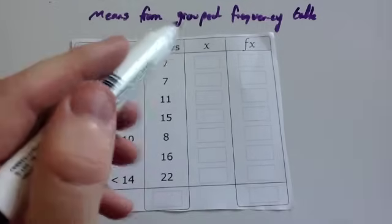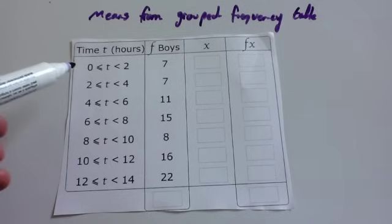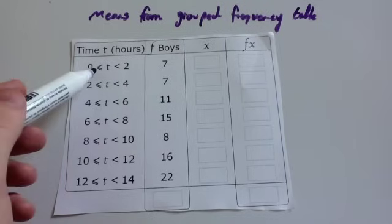We're now going to look at working out the means from grouped frequency tables. Here you can see we've got a grouped frequency table. The reason you know it's a grouped frequency table is it's got the inequalities.